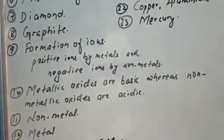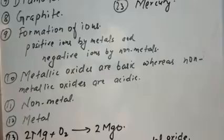Number thirteen: write the word equation for the reaction of magnesium with oxygen. When magnesium reacts with oxygen it becomes magnesium oxide, 2MgO.